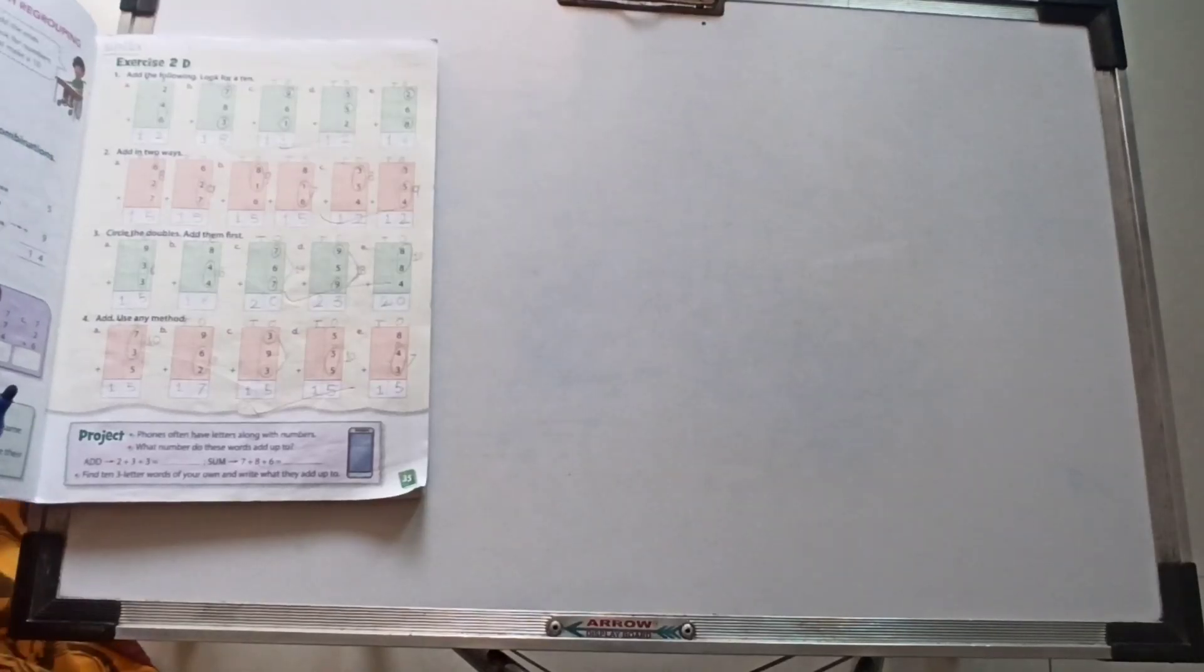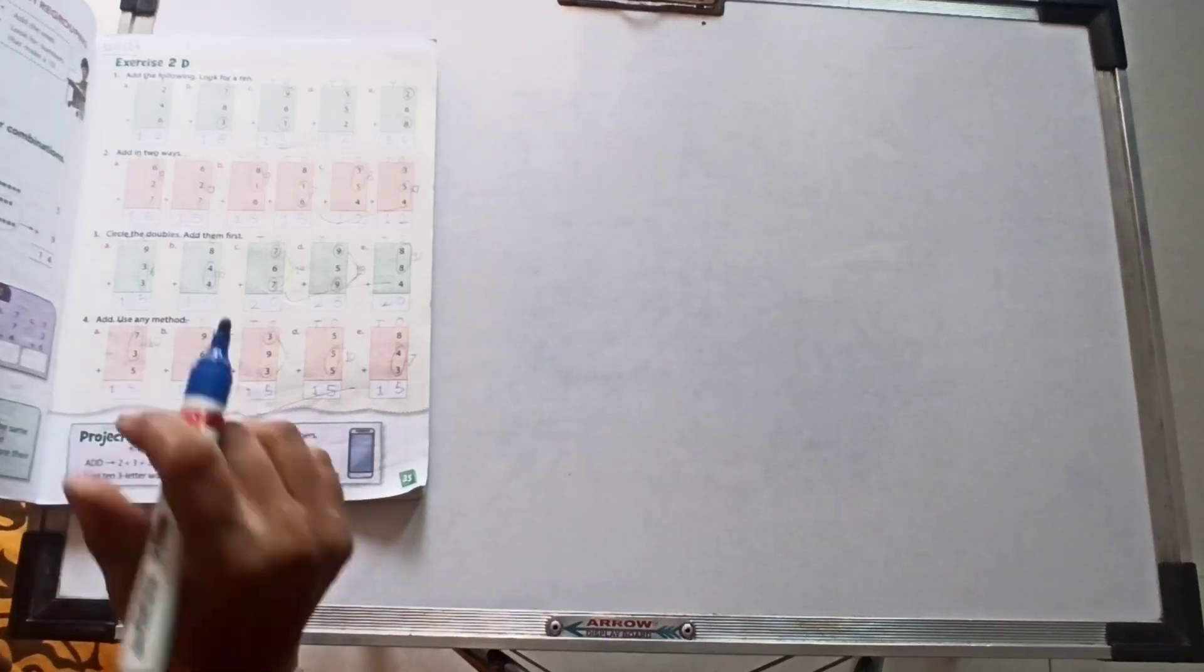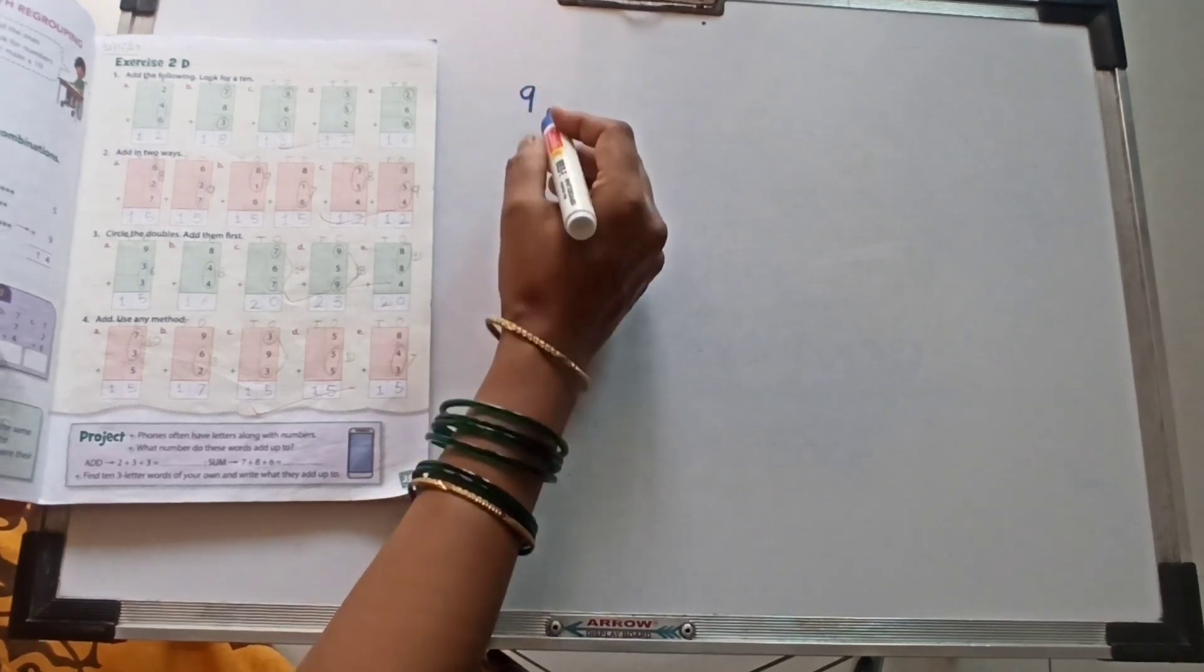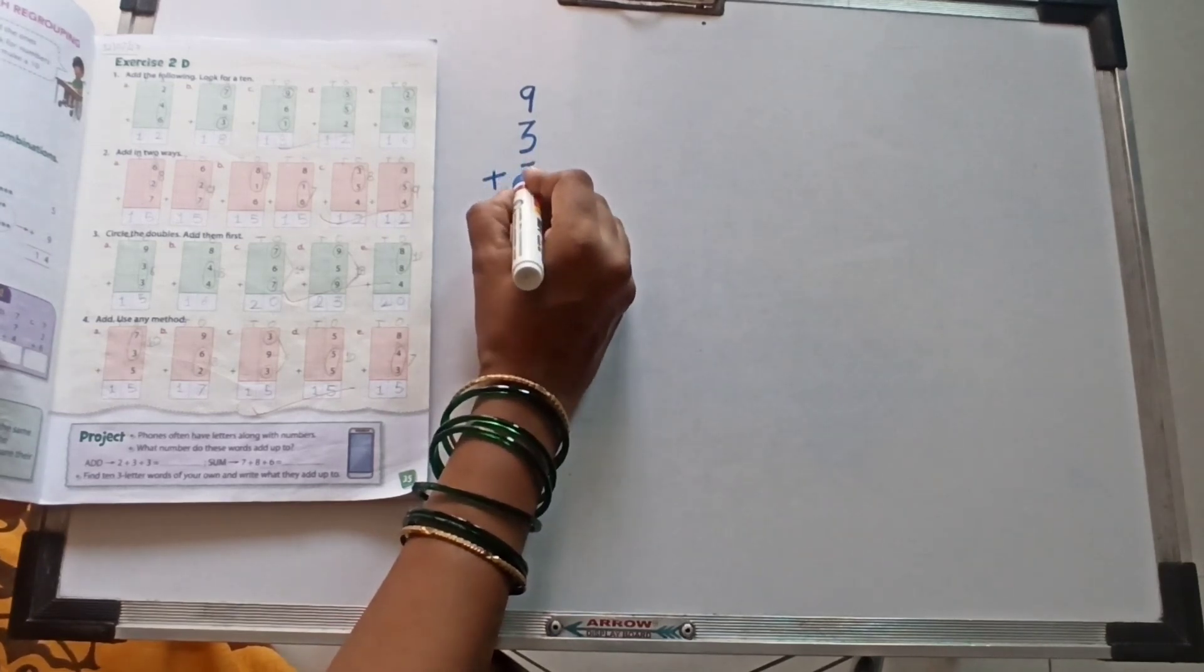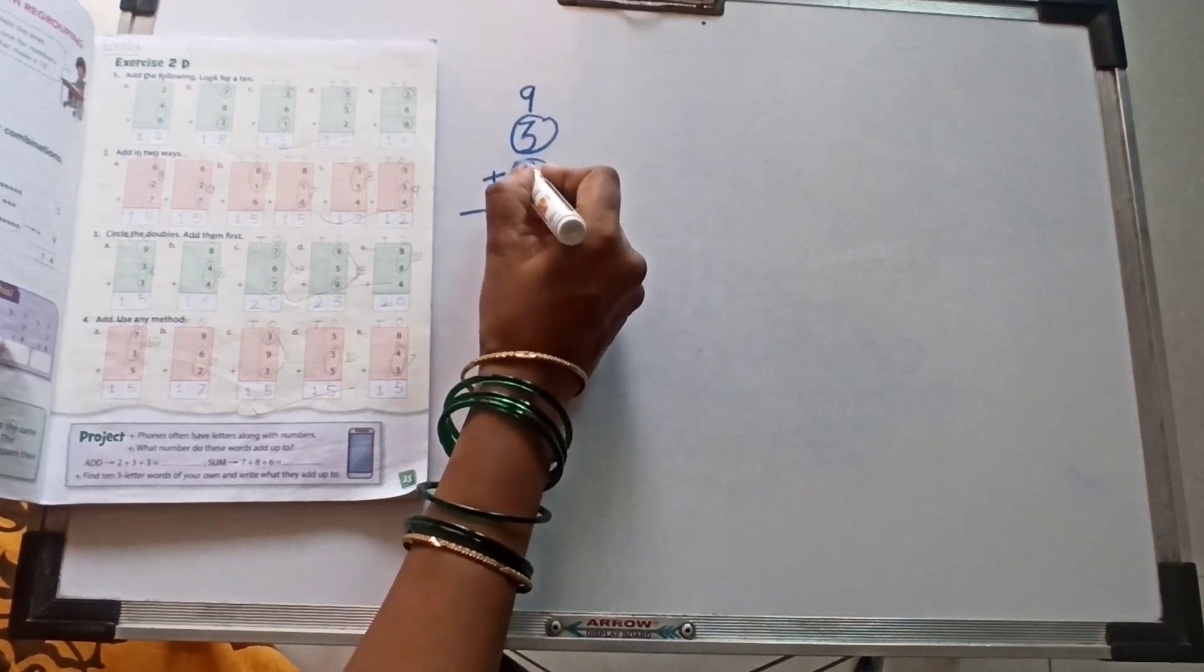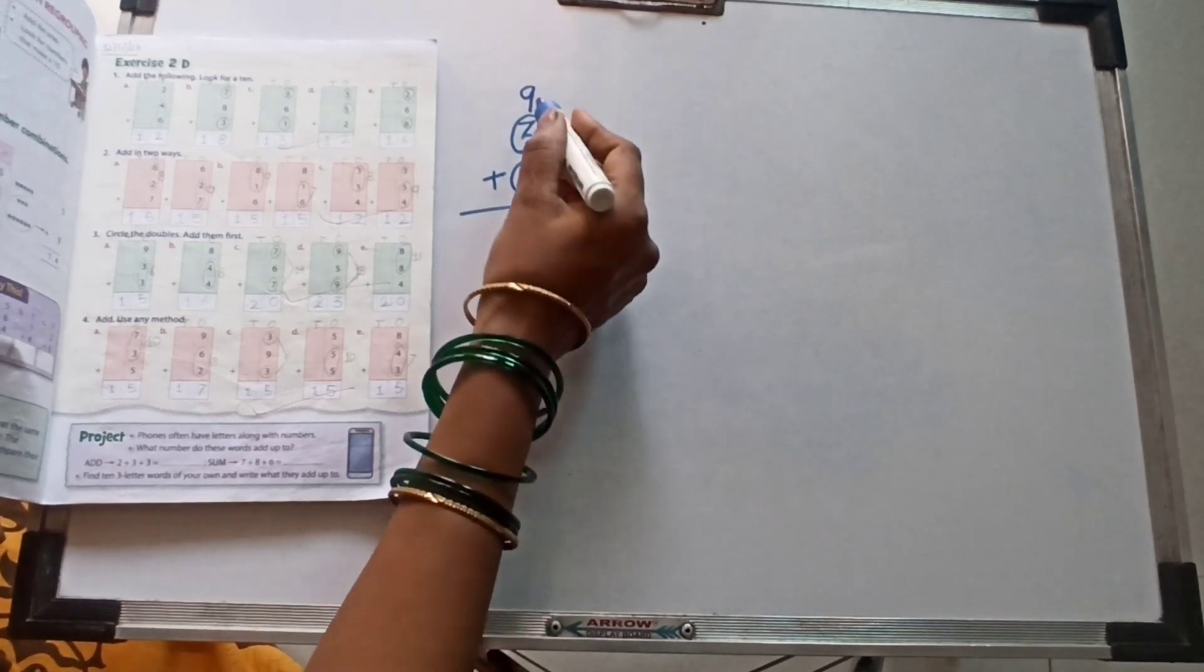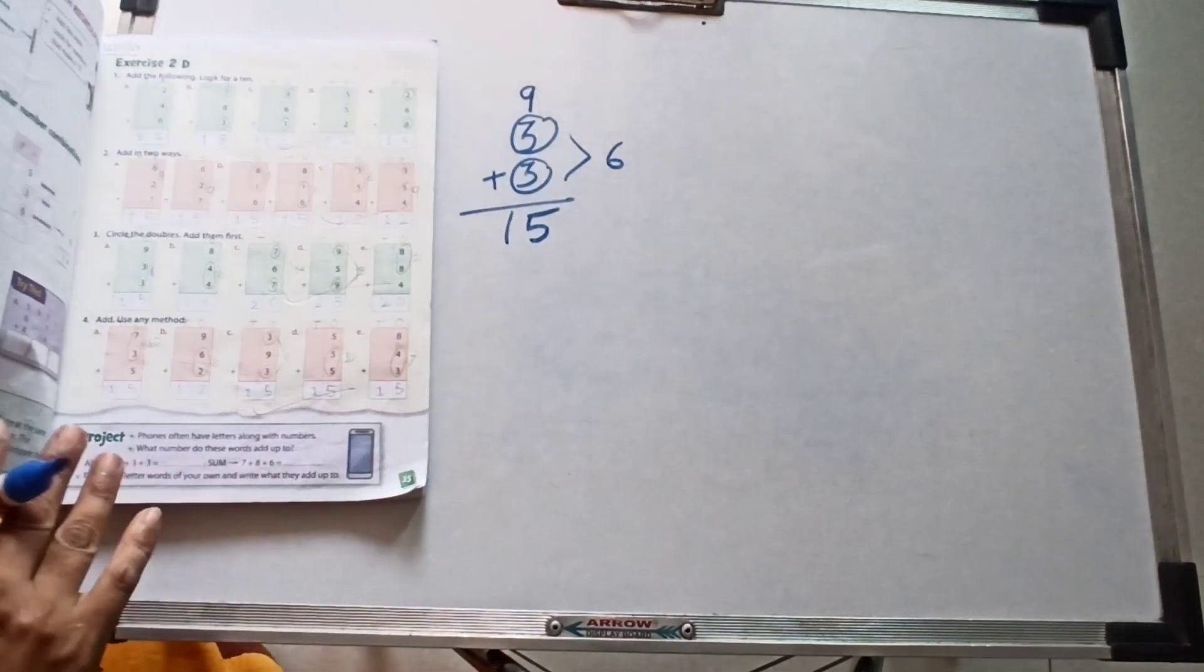This is now our third one question. Circle the doubles and them first. See, first one question: 9 plus 3 plus 3. And our question saying circle the doubles. So circle this one, 3 and 3, because they are doubles. 3 plus 3, 6. And 6 plus 9, 15. Yes, got it. Very good.